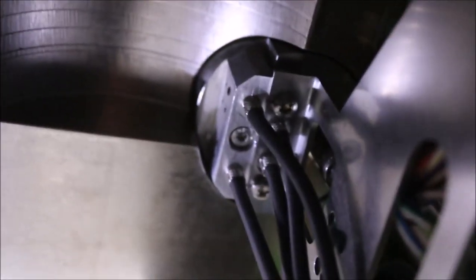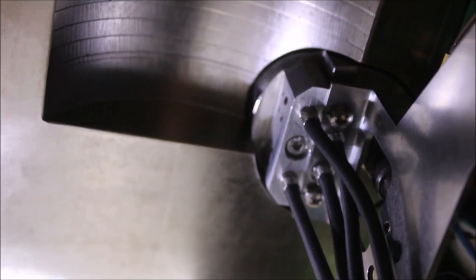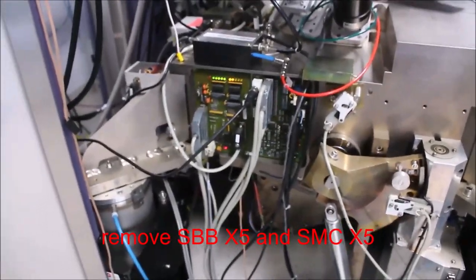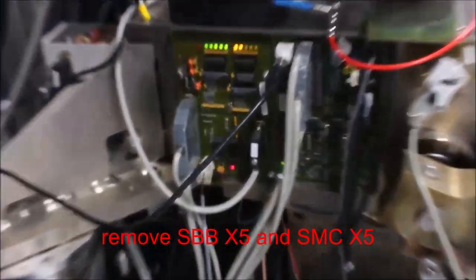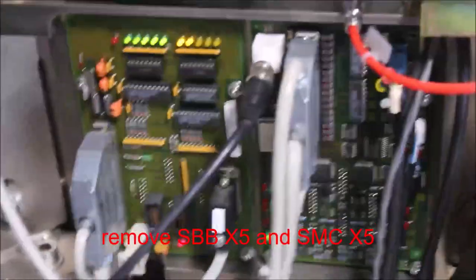One thing we have to do before we can pull out the stage is remove a connector on the inside here. You can see it's attached to a little metal plate with some little tubes. It goes into the ceiling of the chamber. There's one socket head cap screw there. That needs to be removed. On the side there are two connectors, the SBB and the SMC.